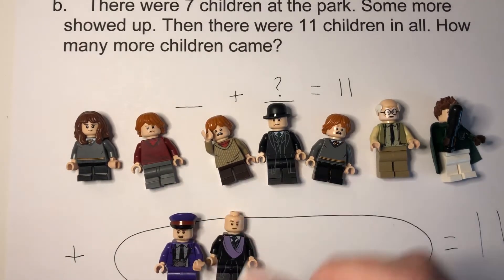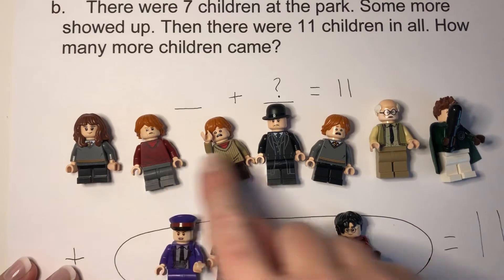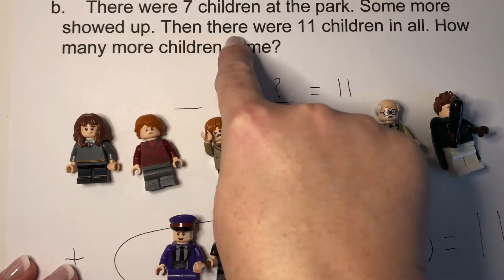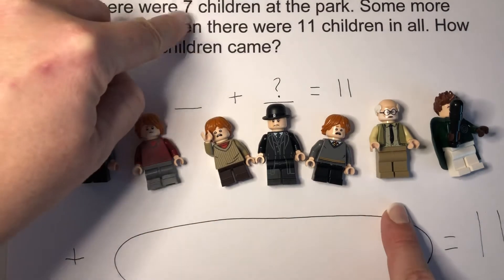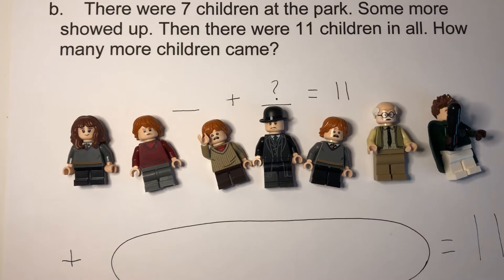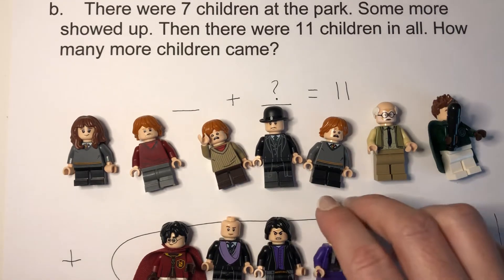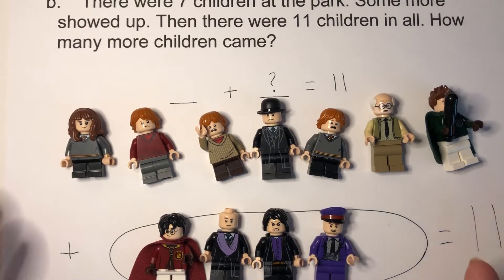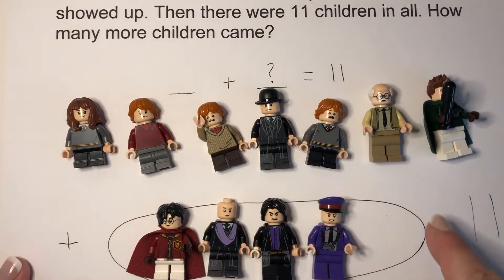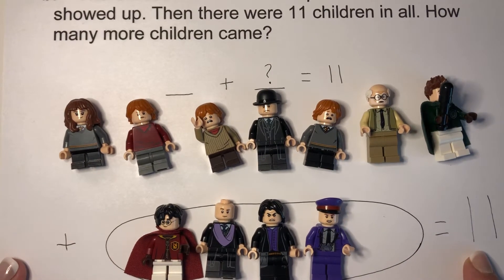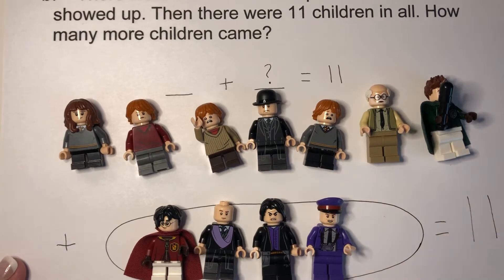Let's count some more: eight, nine, ten, eleven. I'm at the number that I need to be at. There were seven children at the park, some more showed up, then there were eleven children — we just hit eleven. Let's do it again: we started with seven children, seven. Let's count up until we get to eleven: eight, nine, ten, eleven. There's our number, we got to eleven. So how many did we add to our seven? We started with seven and added this many more to get eleven: one, two, three, four. We added four more to get eleven.